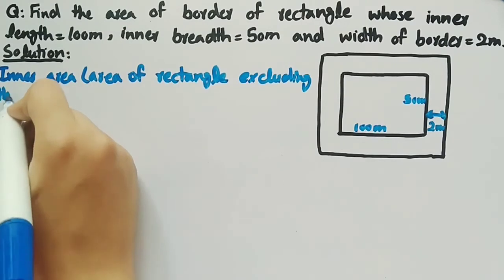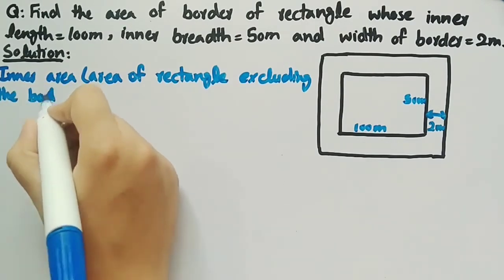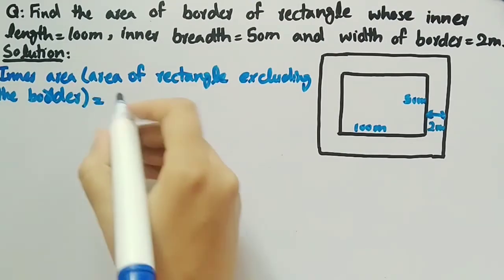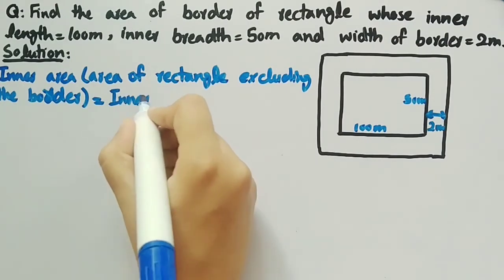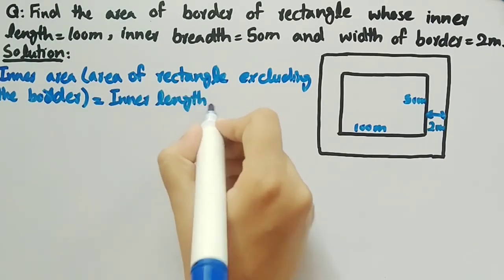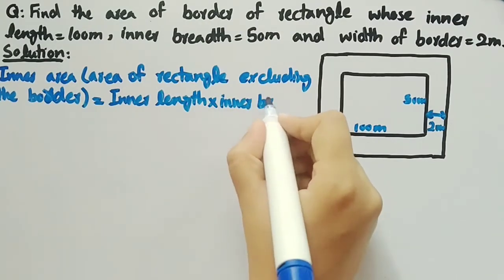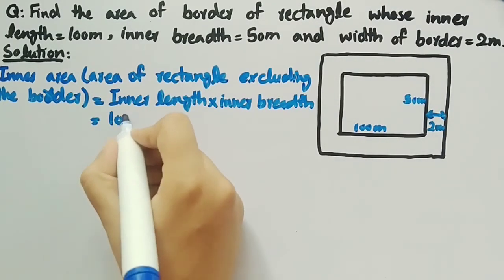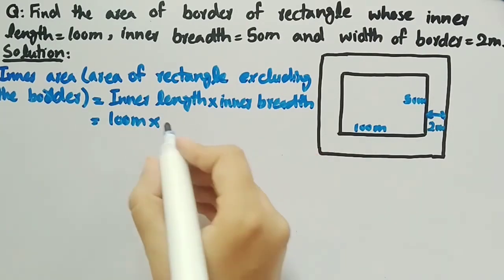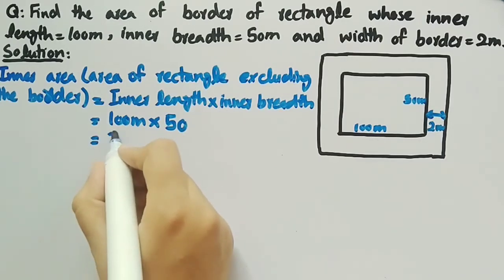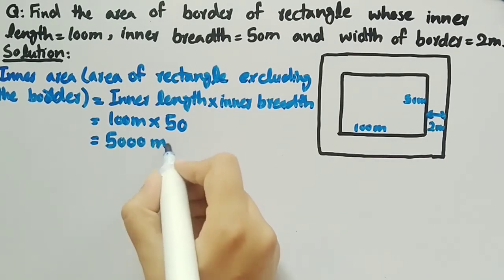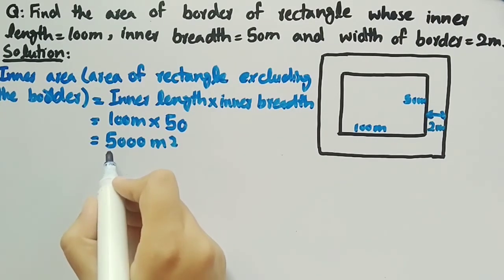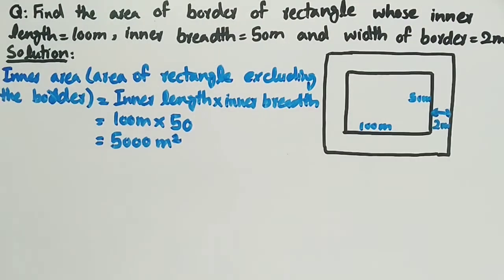The inner area, that is, the area of the rectangle excluding the border, is equal to inner length multiplied by inner breadth. Substituting the values, inner length is 100 meter multiplied by inner breadth 50 meter, giving us 5000 meter square. This is the inner area.